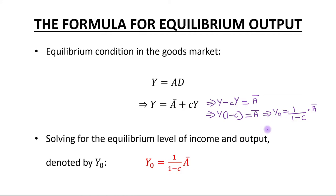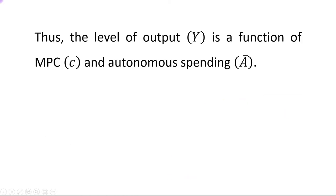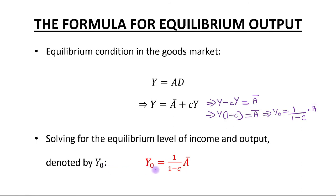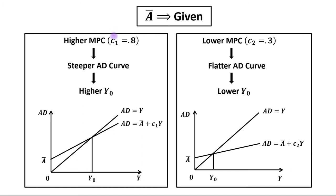Thus the level of output Y is a function of MPC and autonomous spending. Now suppose that autonomous spending is given — there can be two cases: higher MPC and lower MPC.